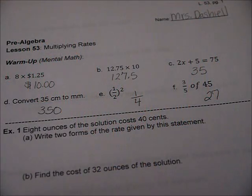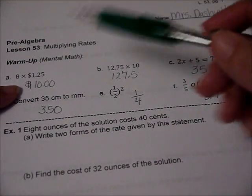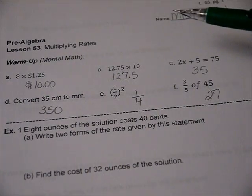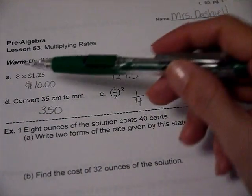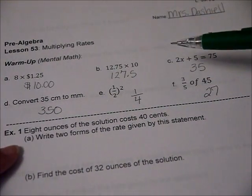Here are the answers to our mental math. If 8 times $1.25 is $10, because 8 times 125 is 1,000. So anytime you see 125 combination with 8, it's going to be a multiple of 10.